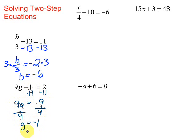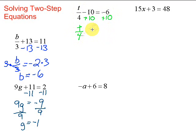Let's take a look at another one. Now we have t over 4 minus 10 equals negative 6. Remember, we want to work our way toward our variable — get closer and closer, taking care of the things further away first. So we have a minus 10. How do we get rid of minus 10? We do the opposite: plus 10. Same thing on both sides. Then bring down what we have left: t over 4. The minus 10 plus 10 cancels out.